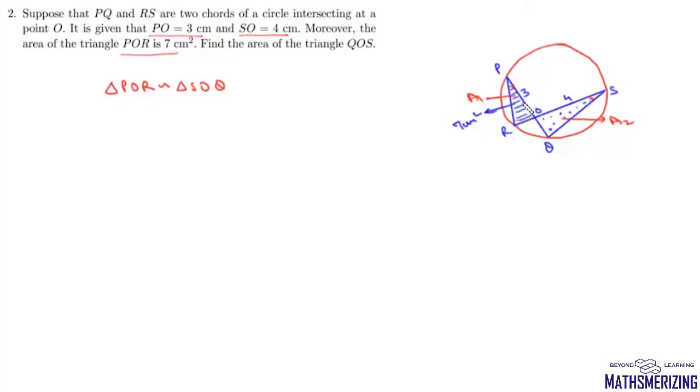If these two triangles are similar, then we can write OP/OS = OR/OQ. Now OP is given as 3 and OS is given as 4. So from here we can say OR/OQ = 3/4.